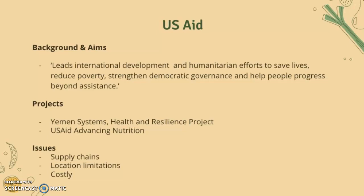USAID: from its website, it says it leads international development and humanitarian efforts to save lives, reduce poverty, strengthen democratic governance, and help people progress beyond assistance. Projects include the Yemen systems health and resilience project and the USAID advancing nutrition project. Issues include difficult supply chains, location limitations, and it can be quite costly.